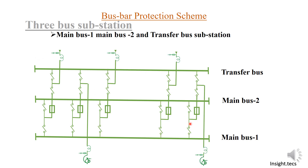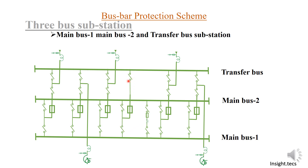Similarly, the outgoing transformer feeder will have one more isolator along with Main Bus 1 and Main Bus 2 selection isolators. A bus coupler is always present to maintain power supply between Bus 1 and Bus 2 in case of any emergency. What is different here is that a Transfer Bus Coupler (TBC) is also present in this scheme, playing a very crucial role. Along with the bus coupler, there are two isolators, one circuit breaker, and one additional isolator for the transfer bus.